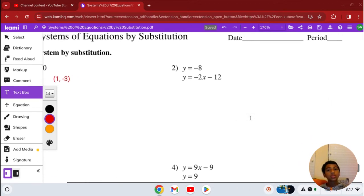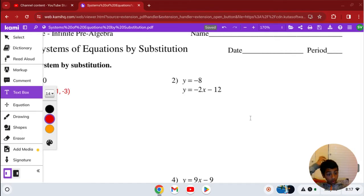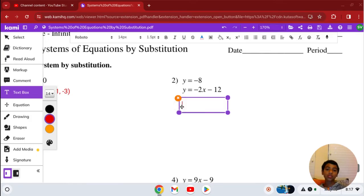Number 2, you have y equals negative 8 and y equals negative 2x minus 12. Same thing, we can plug negative 8 for y. So negative 8 equals negative 2x minus 12. Now we can add 12 to both sides.